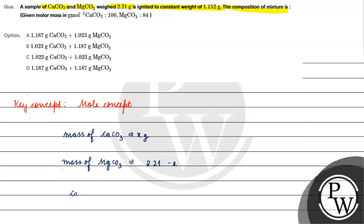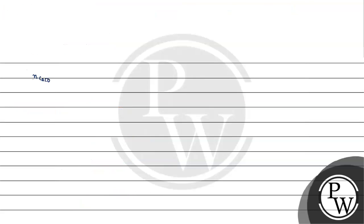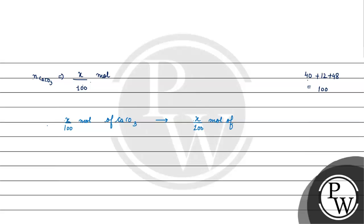अब calcium carbonate को अगर हमने heat किया तो calcium oxide और carbon dioxide बनेगा — carbon dioxide release हो जाएगी। एक mole calcium carbonate से एक mole calcium oxide बनती है। तो number of moles of CaCO₃ = x/100, क्योंकि molar mass of CaCO₃ = 40 + 12 + 48 = 100। इसलिए x/100 moles of CaCO₃ से x/100 moles of calcium oxide बनेगा।